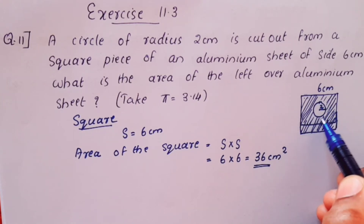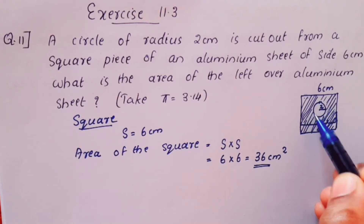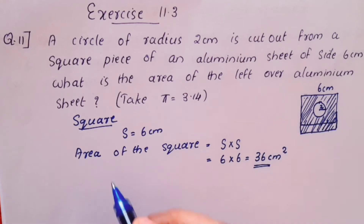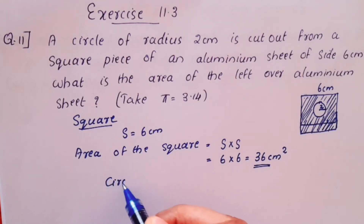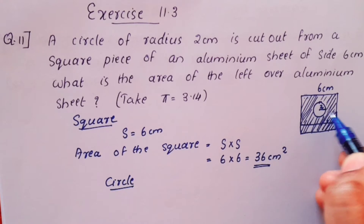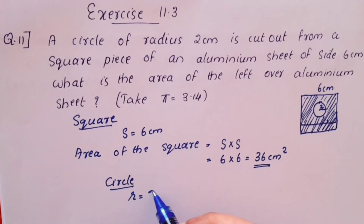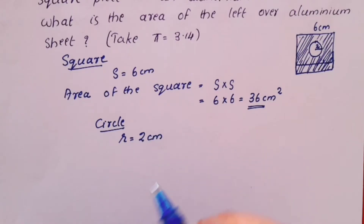Next, we find the area of the circle. The radius r is equal to 2 centimetres.